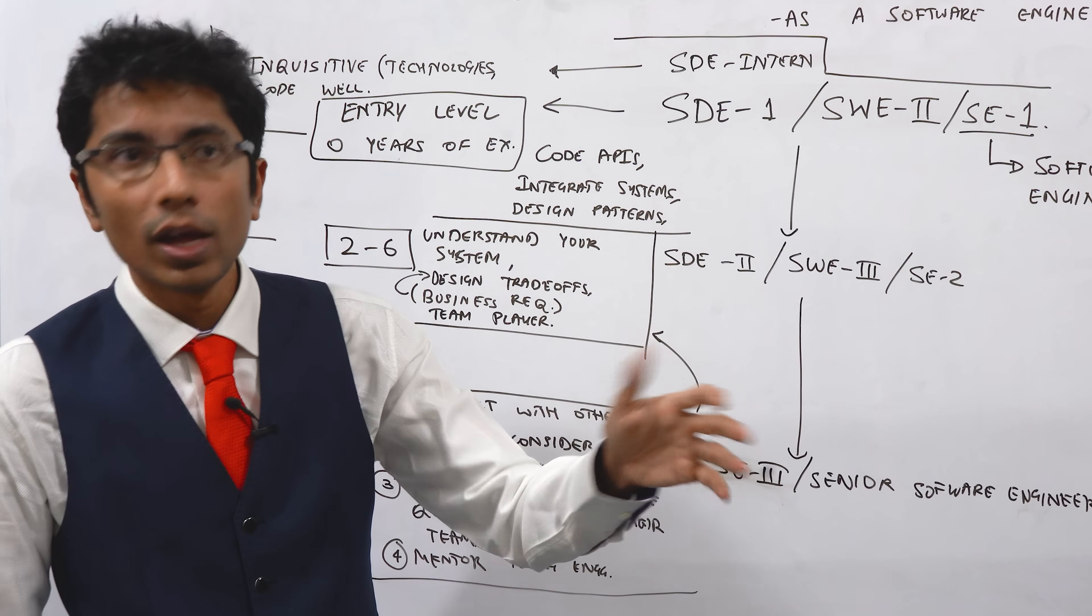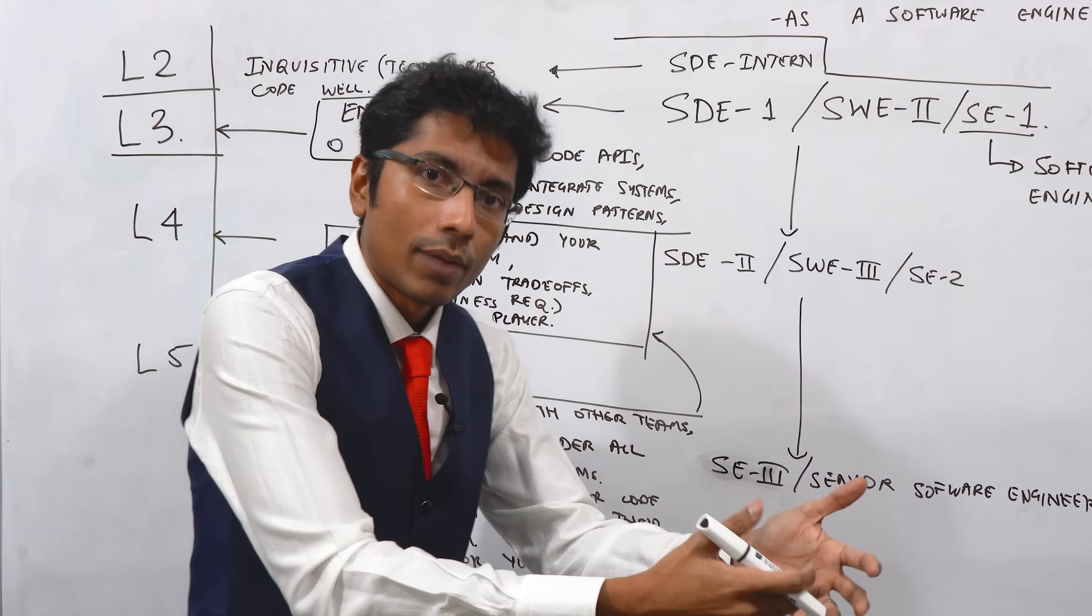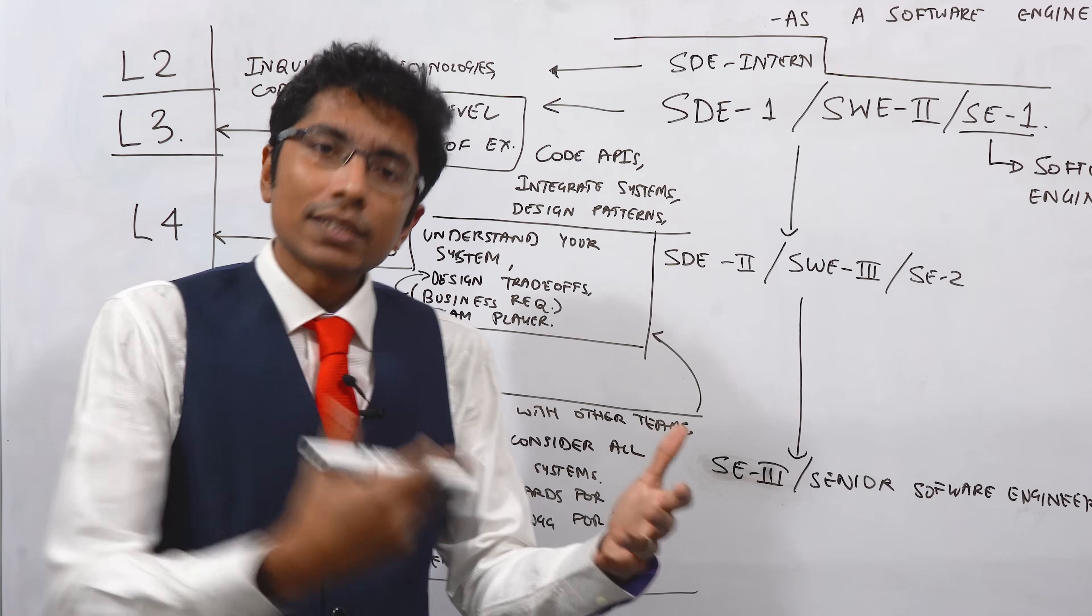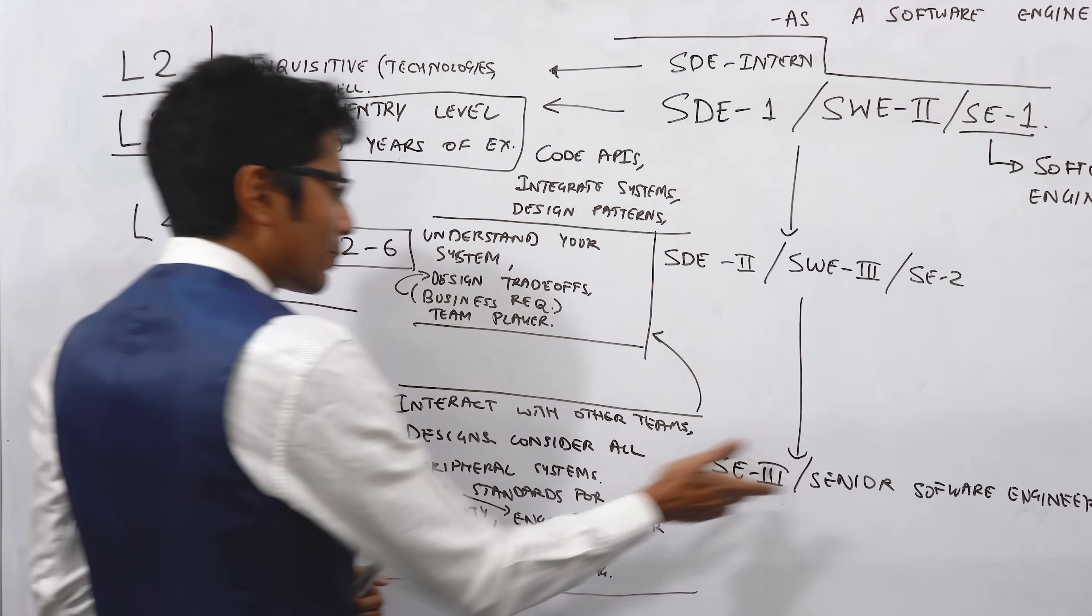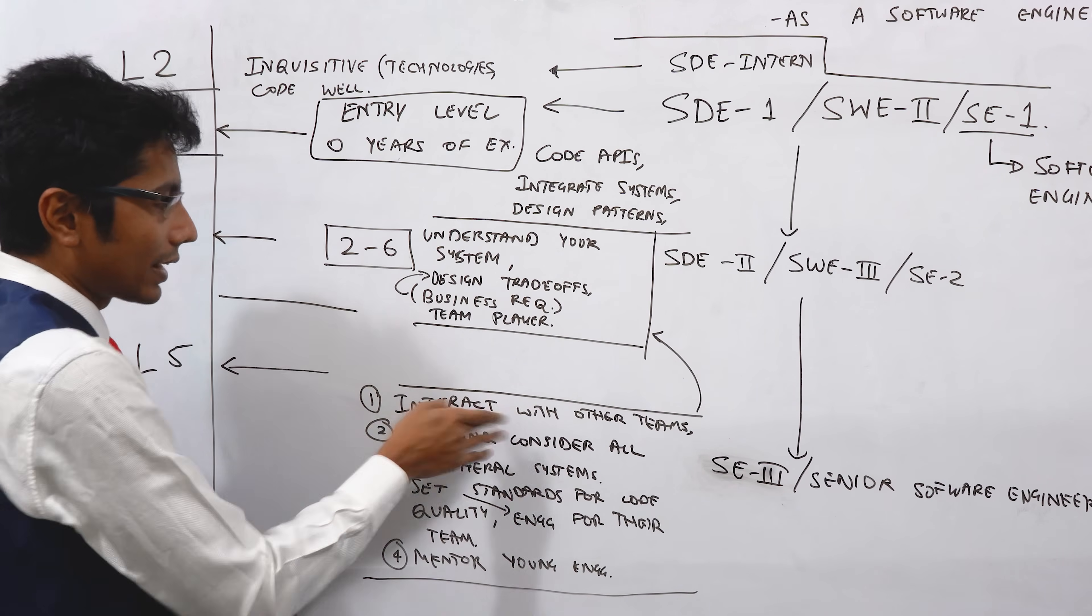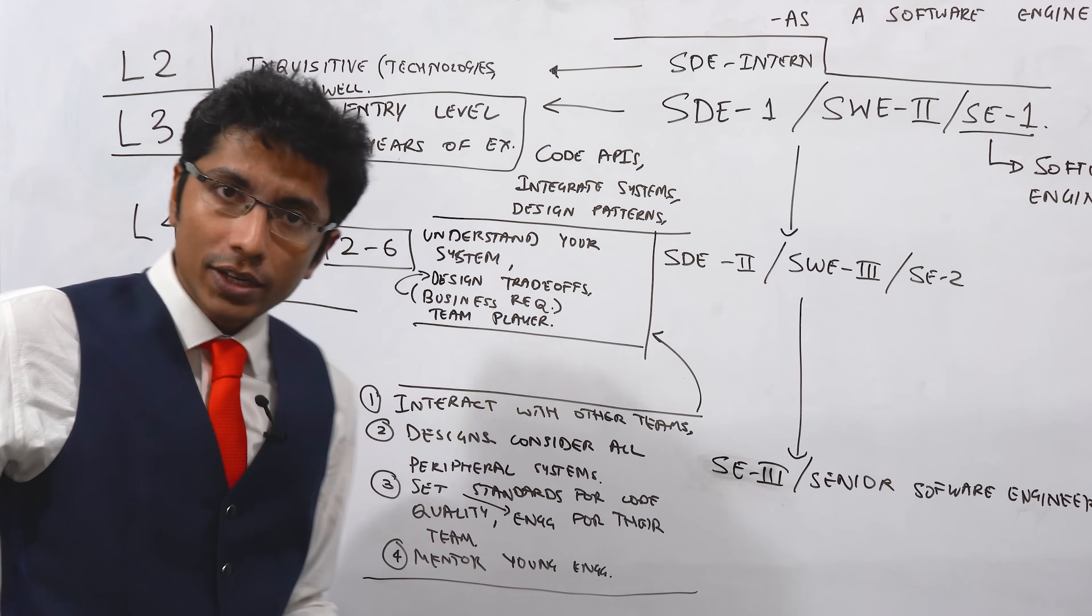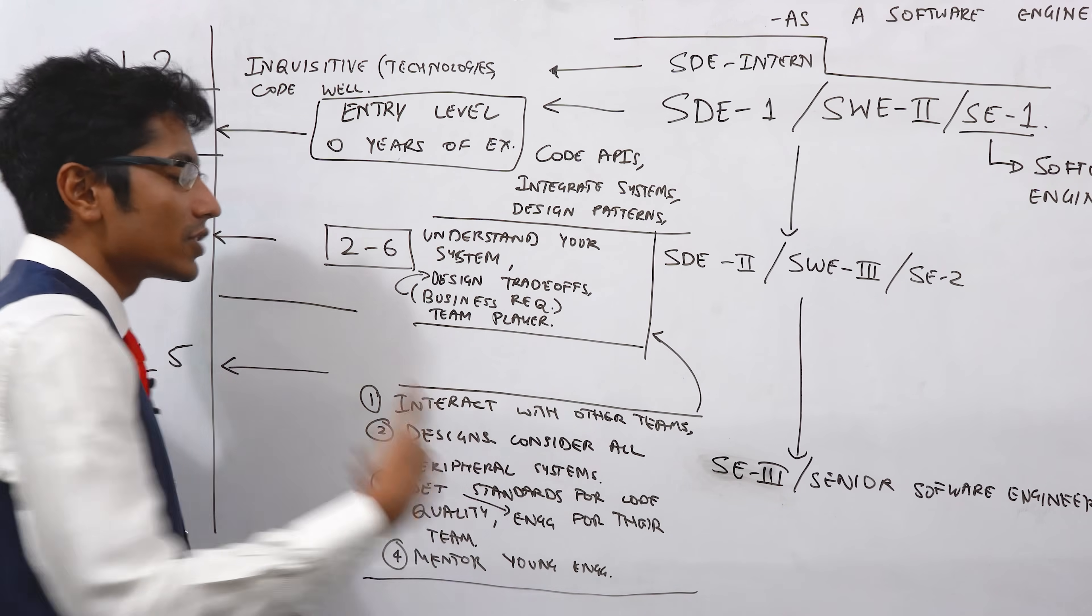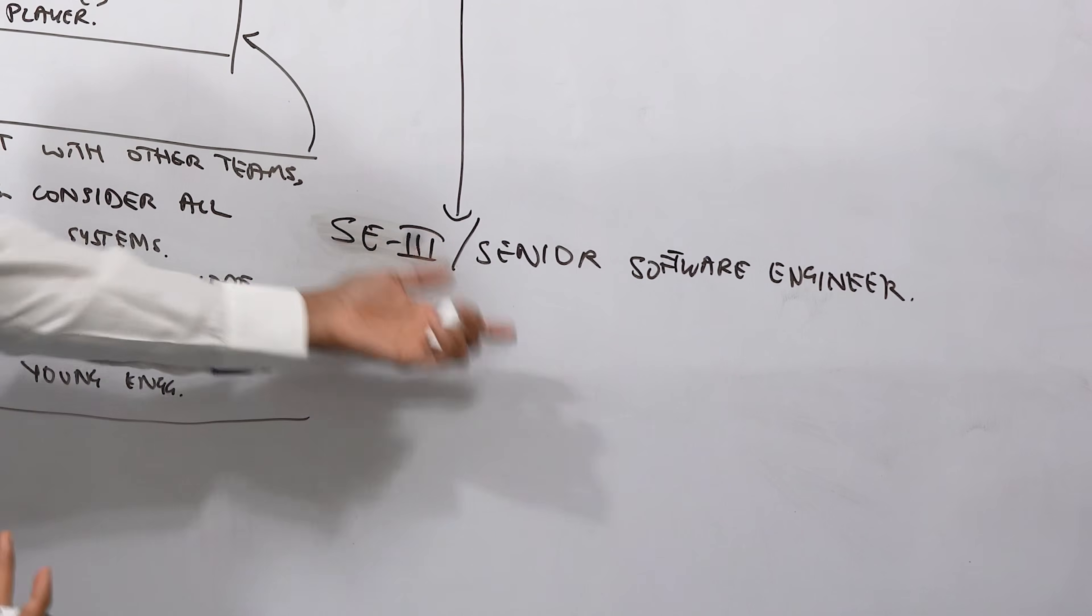But in general the software engineer who's at this position can speak for their team. They don't need a clearance from, 'I'll just go and talk to this person and then they'll get the clearance and then they'll come and talk to you.' Usually what they say is going to be done. They are the tech speakers for their team and the way that they can speak for the team is because they actually consider the design of multiple teams beforehand. Their code quality is really high, which means that the testing level is also pretty high. Significant portion of your time is spent on code reviews.